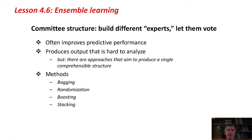The same is true in machine learning. We can often improve predictive performance by having a bunch of different machine learning methods all producing classifiers for the same problem, and then letting them vote when it comes to classifying an unknown test instance. One disadvantage is that this produces output that's hard to analyze, but you often get very good performance. It's a fairly recent technique. We're going to look at four methods: bagging, randomization, boosting, and stacking.